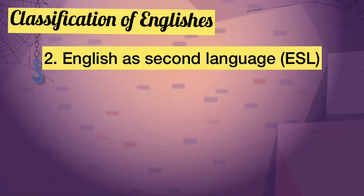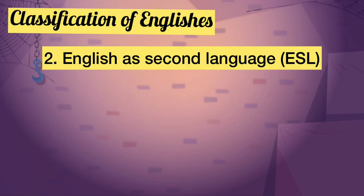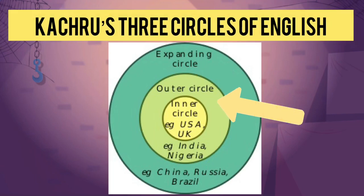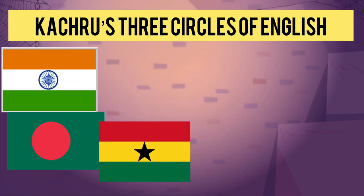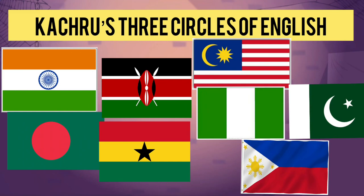For the second classification, we have English as a second language, or ESL — an additional language for intranational as well as international communication in communities that are multilingual, such as in India, Nigeria, and Singapore. Most of these Englishes developed as a result of imperial expansion that brought the language to various parts of the world. In Kachru's three circles, this is the outer circle, wherein it denotes those countries where English usage has some colonial history — including India, Bangladesh, Ghana, Kenya, Malaysia, Nigeria, Pakistan, and even the Philippines. We are part of the outer circle, or ESL, English as a second language.